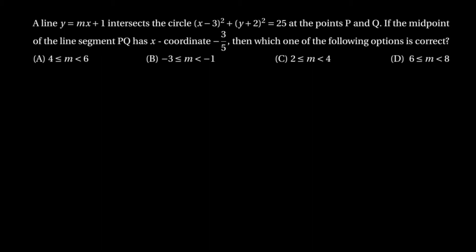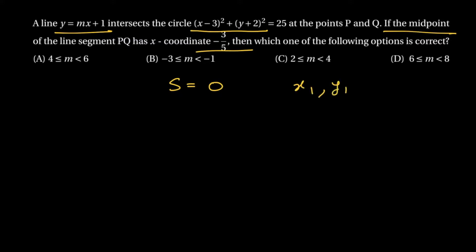The idea is: you have a circle and there is a chord of the circle, and the midpoint of the chord has x-coordinate −3/5. If I have a circle S = 0, let's write the equation of the chord of the circle whose midpoint is (x₁, y₁). It is given as T = S₁₁.